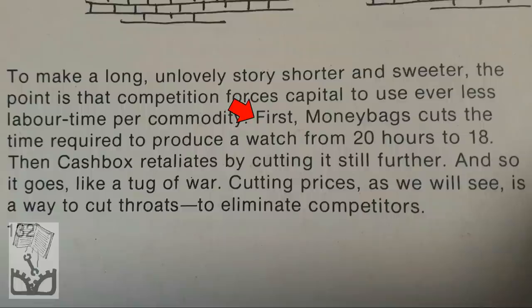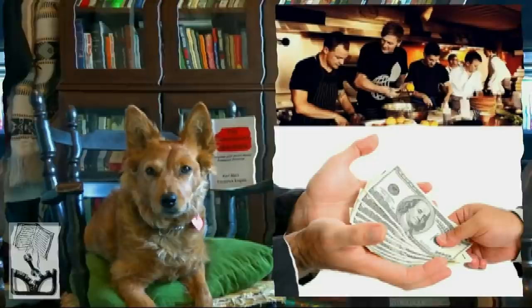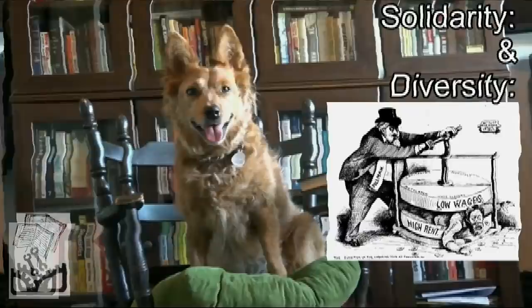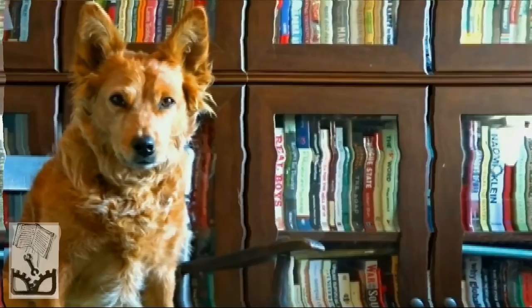Smith and Evans put it this way: 'First, Moneybags cuts the time required to produce a watch from 20 hours to 18. Then Cashbox retaliates by cutting it still further. And so it goes, like a tug of war.' The worker wants to work at the least intensity for the most pay, while the capitalist wants the worker to work as hard as possible for as little pay as possible — that's class warfare in a nutshell.